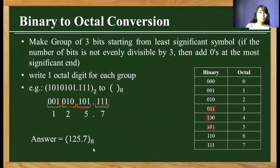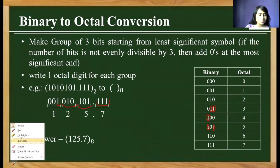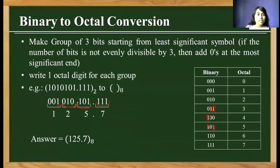To summarize binary to octal conversion: take the binary pattern and make groups of 3 bits. If there is a fractional number, start making groups from the point side. Then successively write the octal equivalent for each group of 3 binary bits to get the final answer.